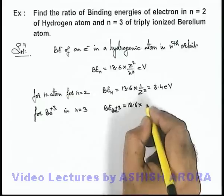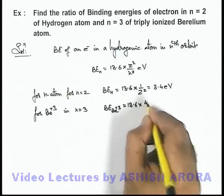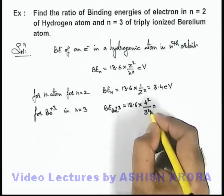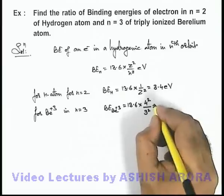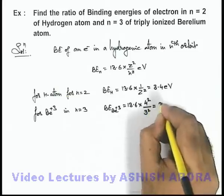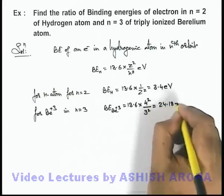So in this situation, this will be 4²/3², which can be written as 13.6 × 16/9 = 24.18 electron volts.